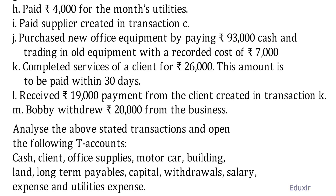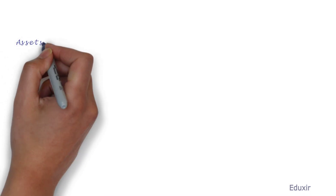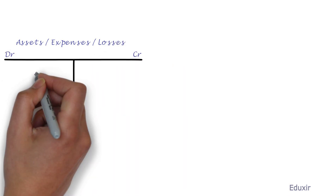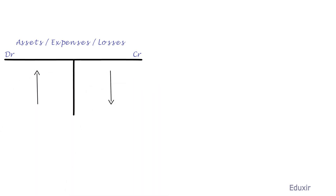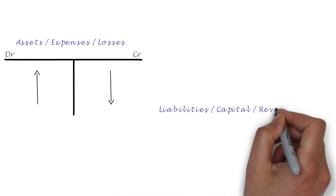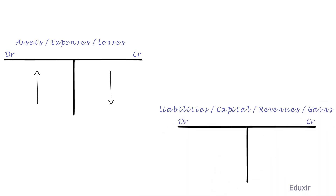Before we proceed with the solution, let us recap the rules for debiting and crediting accounts. In case of assets, expenses or losses, an increase should be debited and a decrease should be credited. In case of liabilities, capital, revenues or gains, any increase should be credited and a decrease should be debited.